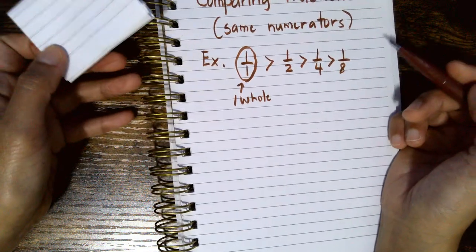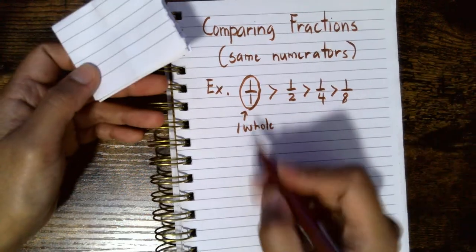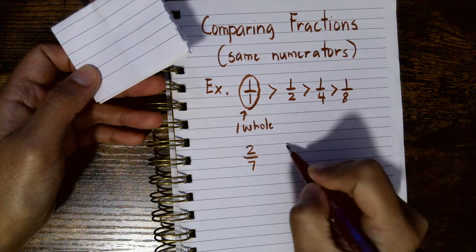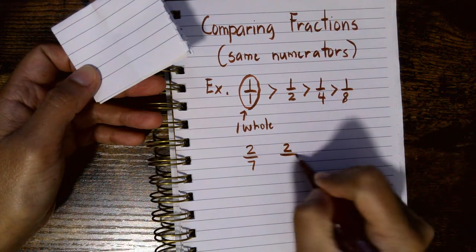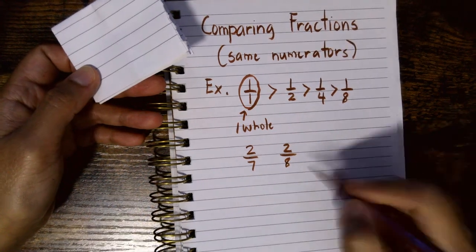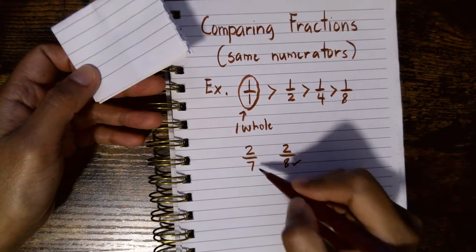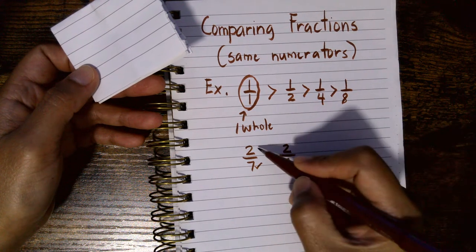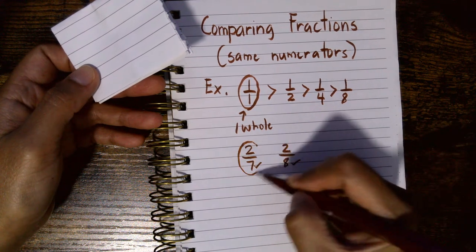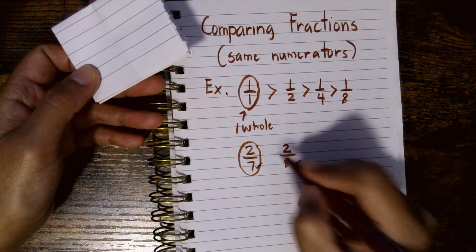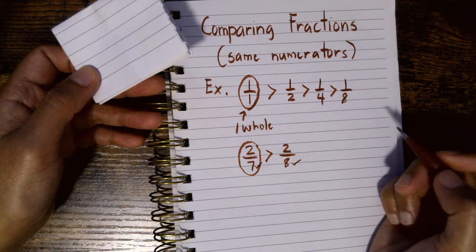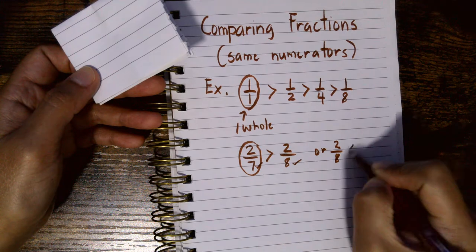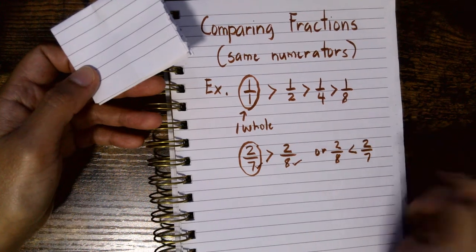Let's take a look at some more examples. Let's say we have two over seven and two over eight. Two over eight has a greater denominator than two over seven, which means two sevenths is bigger than two eighths. So two sevenths is greater than two eighths, or two eighths is less than two sevenths.